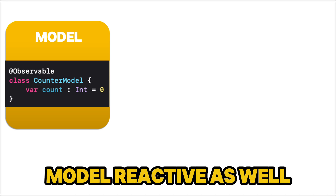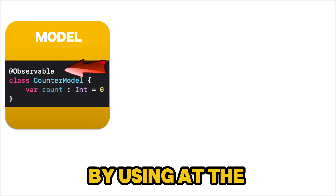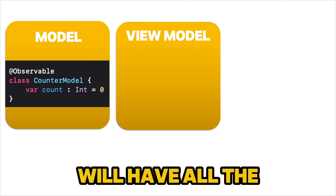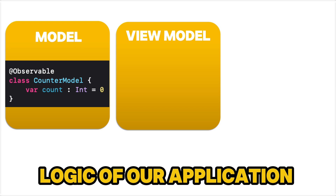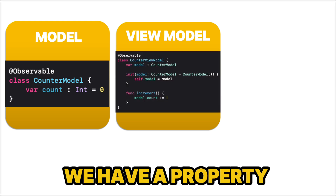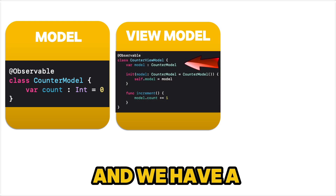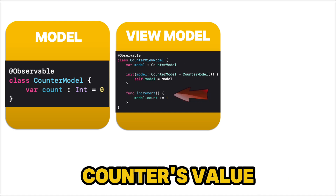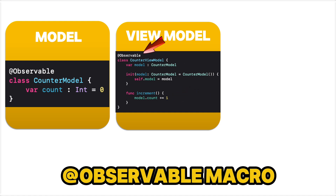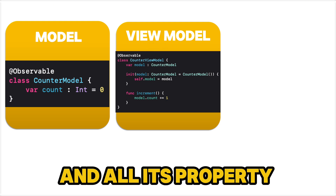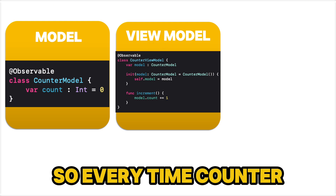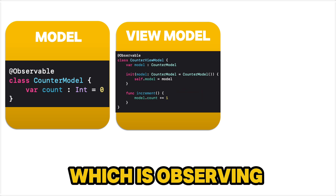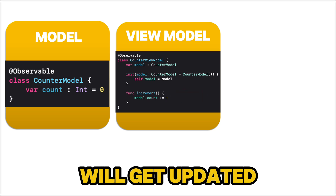We can make this model reactive as well by using the @Observable macro. Then we have the view model — this is where we will have all the business logic of our application. In our view model, we have a property of our counter model and an increment method to update the counter's value. We can just annotate our view model with @Observable and all its properties will become reactive, so every time the counter value is updated, any observing view will get updated.